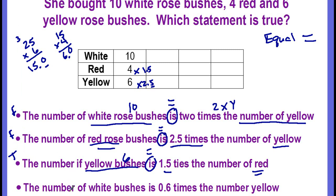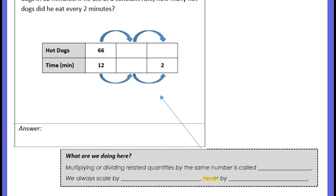Statement D: the number of white rose bushes is six tenths times the number of yellow. There are 10 white bushes. Six tenths times 6 — six times six is 36, one decimal place gives 3.6. Is that equal to 10? No, it's not. So ratio tables can help you determine if different multiplicative comparisons are true. Ratio tables can also help you make predictions.